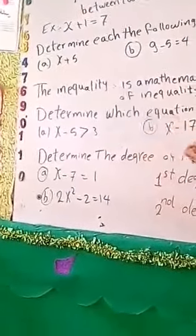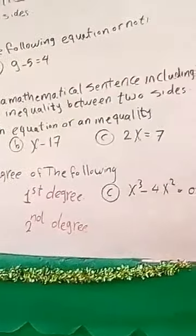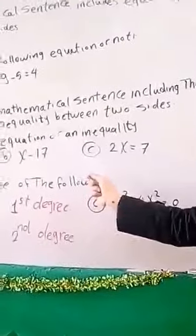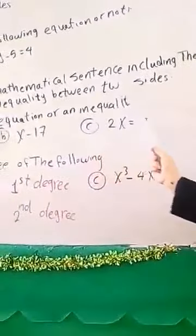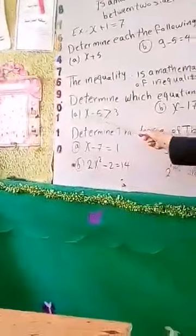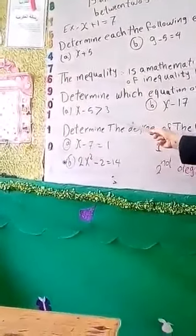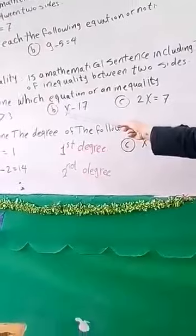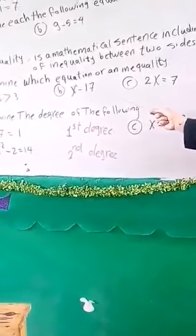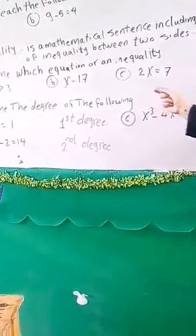What is an inequality? An inequality is a mathematical statement that includes a sign of inequality — more than or less than — between two sides. For example, x minus 5 more than 3 is an inequality. But x minus 17 is not an equation and not an inequality, because it has no equals sign and no inequality sign.